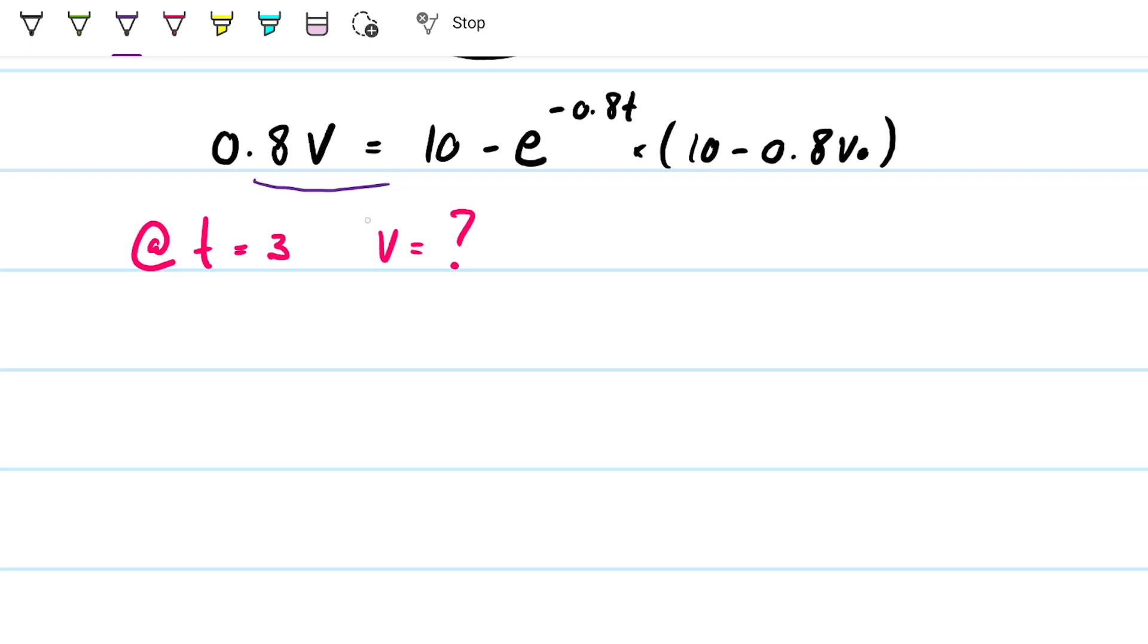All right, so to do that, I will first divide everything by 0.8. So v equals 10 divided by 0.8 will be 12.5 minus e to the... and then these guys here, they'll also be 12.5 over here. And then this v₀, we already know to be 16.5, and this I'm substituting by 3, so I'm multiplying by 3 here.